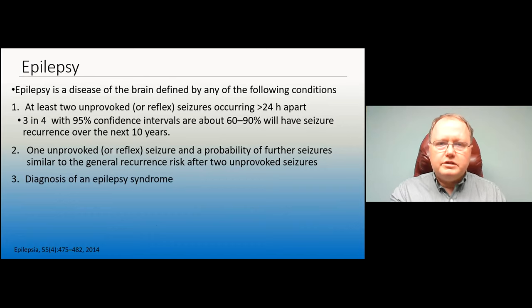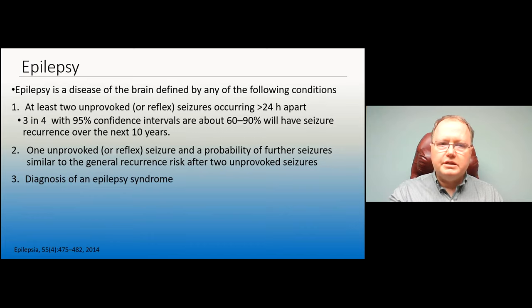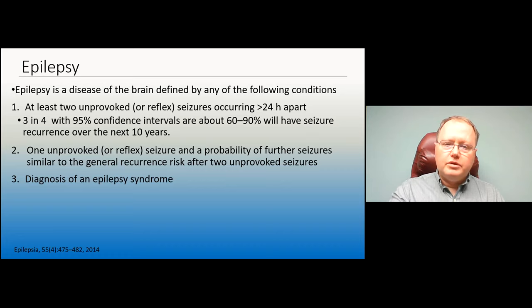So what is epilepsy? It's a disease of the brain defined by one of three conditions. Number one: two unprovoked seizures more than 24 hours apart, which statistically gives about a 60–90% chance of another seizure over 10 years. Number two: one unprovoked seizure where the probability of further seizures is similar to that risk — factoring in abnormal EEG, MRI, abnormal neurological exam, a nocturnal seizure, or a diagnosis of an epilepsy syndrome.